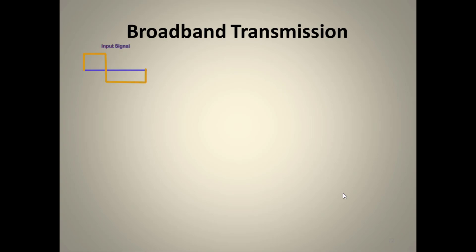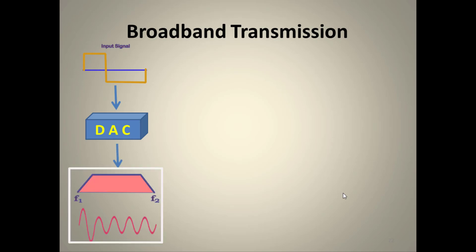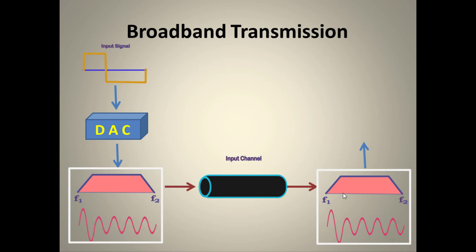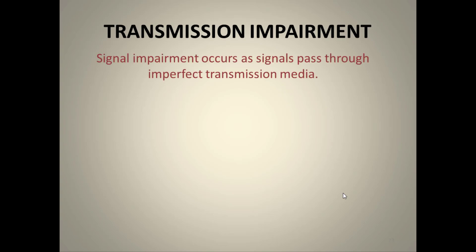In broadband transmission, the digital input signal is first converted to an analog signal using a DAC (Digital-to-Analog Converter). The analog signal has a finite bandwidth and is transmitted through the channel, which supports its entire bandwidth. At the receiving end, an ADC (Analog-to-Digital Converter) converts the signal back to digital, and the original signal is easily recovered.